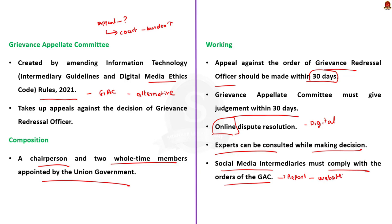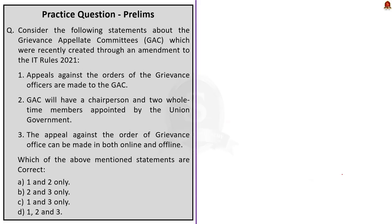From this discussion, statements 1 and 2 are correct and statement 3 is incorrect, because the appeal against the order of a grievance officer can be made only through online mode and not offline mode. So the correct answer is option A — 1 and 2 only.